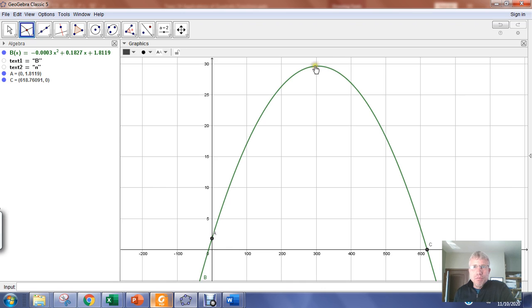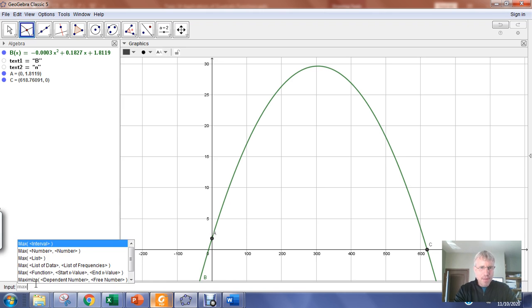To find the vertex, which in this case I see that I have a parabola opening downward, which means this vertex is a global maximum. So in the input bar down at the bottom left, click into the input bar and type max, M-A-X. And it will prompt me with the list of max options and I want the option right here that says max function start value end value.